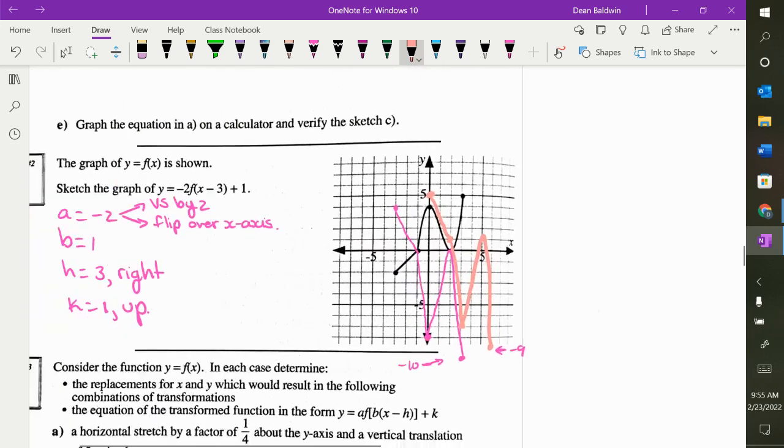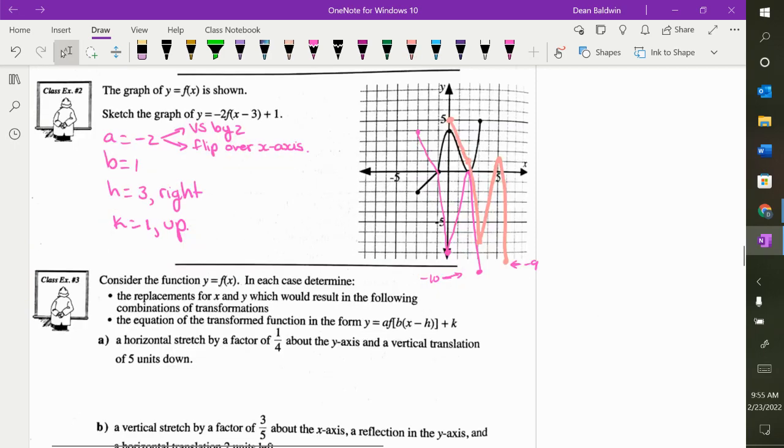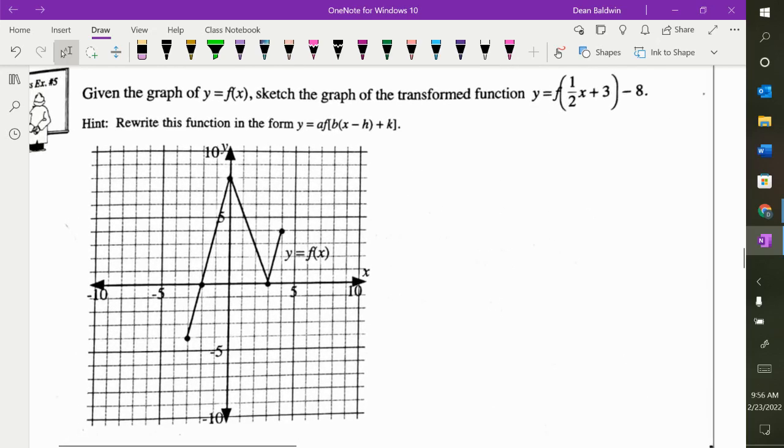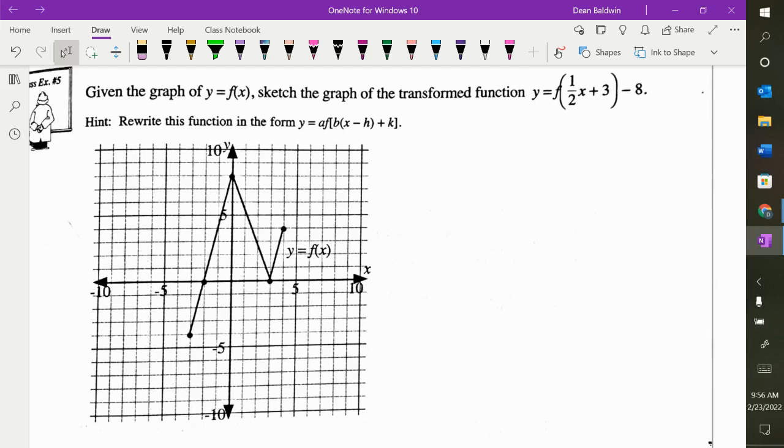Let's do one more graph on the next page that doesn't overlap as much. This graph has a trick to it, or this function has a trick to it. Here is what we're doing to this graph. What is wrong with the way that is written? This is our general equation. What is wrong, how does this differ from that?